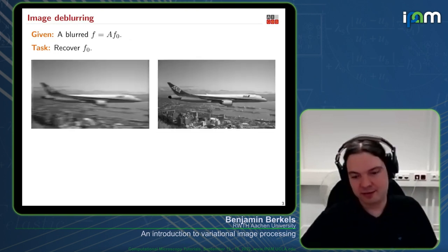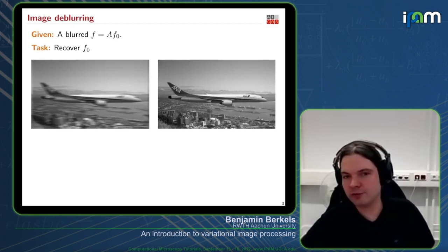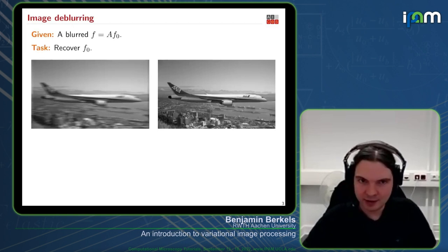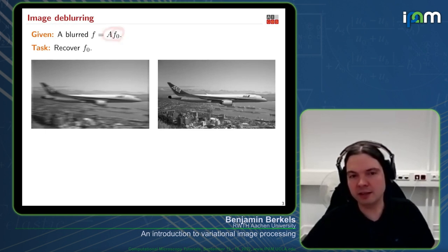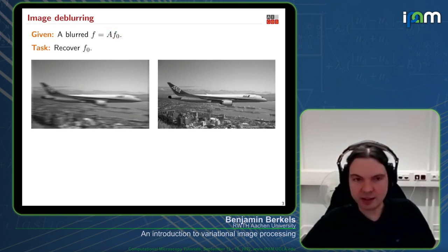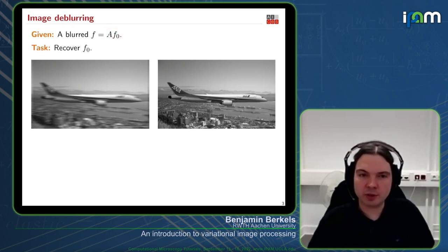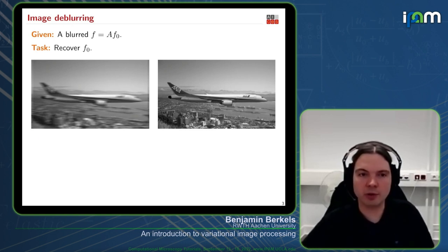Then there is image de-blurring, which you could see as a variant of denoising. There, you do not observe the image directly, but the image after it's convolved with some operator — here a linear blur. You are given that blurred image and you want to recover the original one, removing the blur.